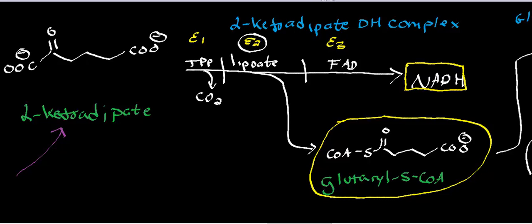Welcome back. In the last video, we saw the conversion of 2-amino-3-carboxymuconate-6-semialdehyde all the way down to alpha-ketoadipate, and we talked about how alpha-ketoadipate gets consumed by the alpha-ketoadipate dehydrogenase complex. Mechanistically, this enzyme complex is identical to pyruvate dehydrogenase complex, alpha-ketoglutarate dehydrogenase complex, and the branched chain alpha-ketoacid dehydrogenase complex — they're all mechanistically identical.